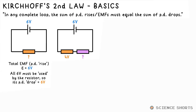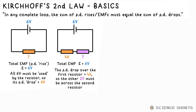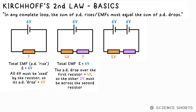Let's get another resistor in series. The PD across the first one, let's say it's 4 volts — so what is it for the second? Well it has to be 2 volts, doesn't it? 6 volts EMF, PD rise, so there must be another 2 volt drop somewhere — 2 volts being used, so that must be in the second resistor. You probably knew the answer already. Then you used Kirchhoff's second law without even knowing it.